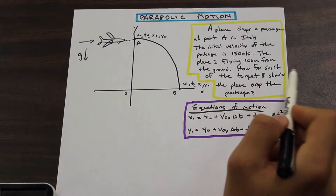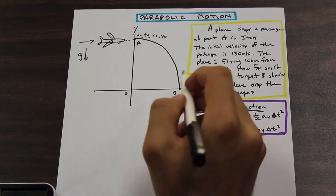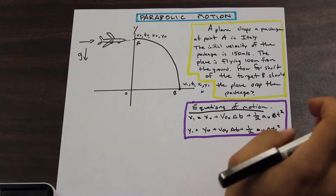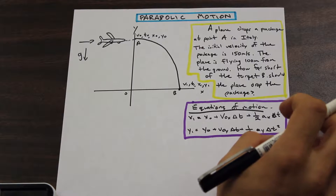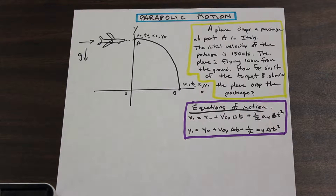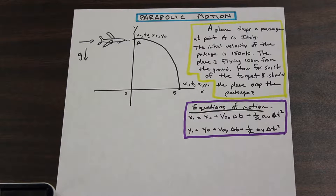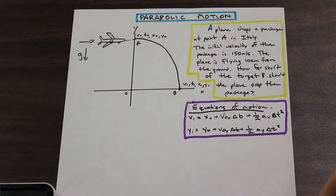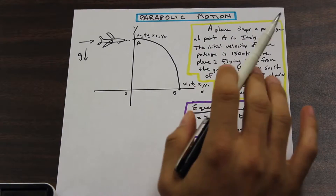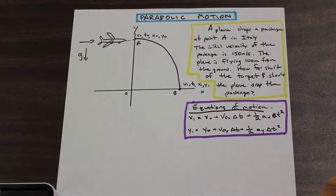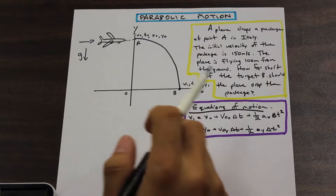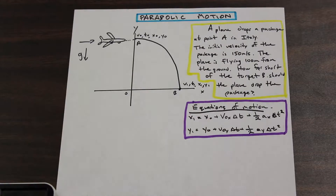The question asks: how far short of target B should the plane drop the package so that it lands there? In a question like this, you need to identify exactly what you know. Using a few rules of parabolic motion — like in the intuitive intro video — we know a few things about parabolic motion.